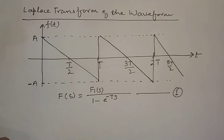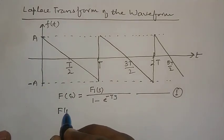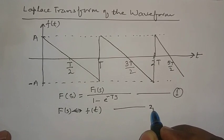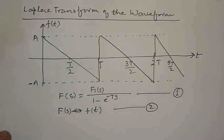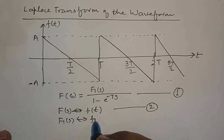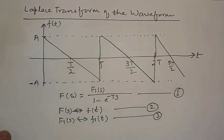Now, there are two terms: F(s) and F1(s). F(s) is the Laplace Transform of the given time domain signal f(t). Whereas F1(s) is the Laplace Transform of f1(t). The question arises: what is f1(t)? F1(t) is the signal which repeats after a certain interval many times and makes the total waveform periodic.